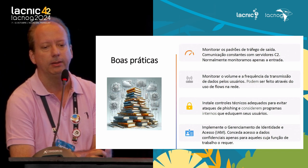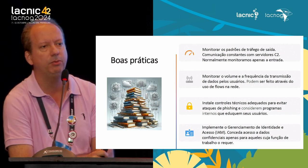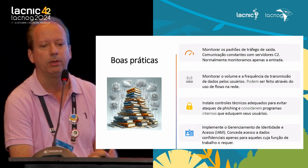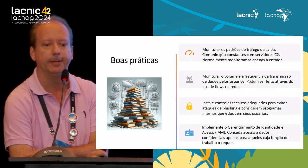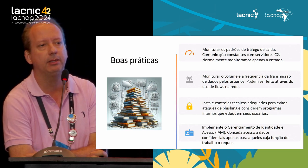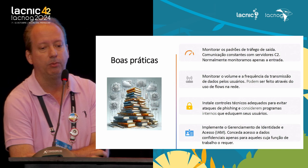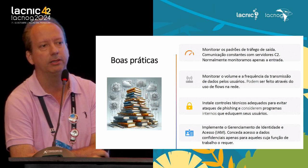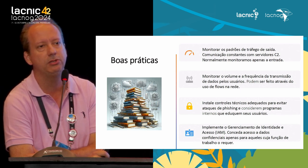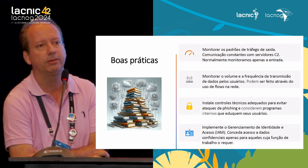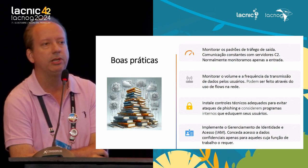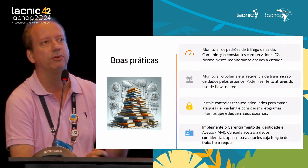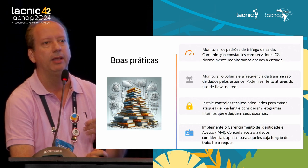Regarding best practices, we always have to monitor outbound traffic standards. Very often we monitor inbound traffic, but if we don't control outbound traffic as carefully, we miss threats. Using flows tools, we can monitor the frequency and amount of data leaving a network. We have to install adequate technical controls, train users so they don't feel tempted to click on malicious links — this is how phishing occurs, bringing malware and data leaks. And of course, identity access management is essential in order to provide access to users, allowing them to manage only what they can really use.